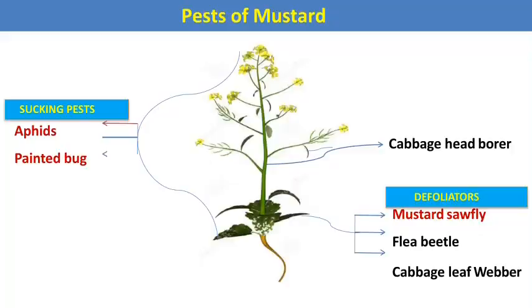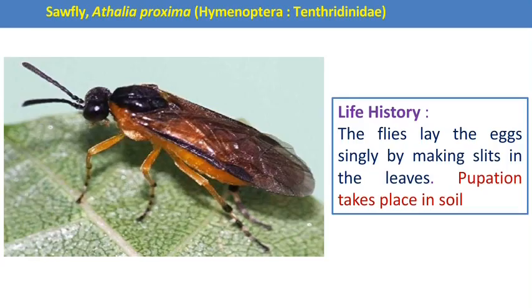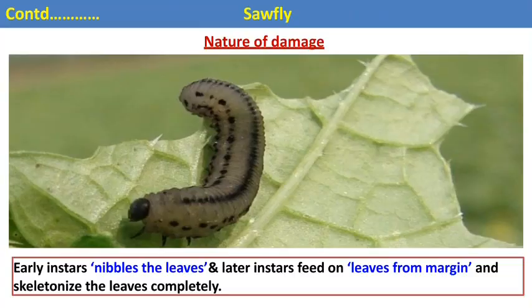The next crop is mustard. In mustard, mustard sawfly and mustard aphid are the two major pests. The first pest is the mustard sawfly — a Hymenopteran pest. Notably, Hymenoptera is an otherwise beneficial order, and mustard sawfly is the only pest within it. The female fly lays eggs singly by making slits in the leaves. Pupation takes place in the soil. The larva is the damaging stage: early instar larvae nibble the leaves, and later instar larvae feed on leaves from margin up to mid-rib, causing complete skeletonization.